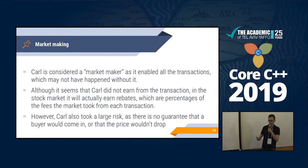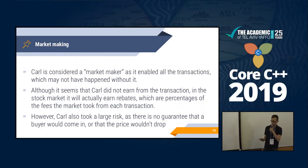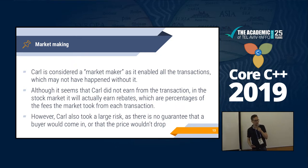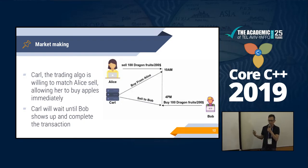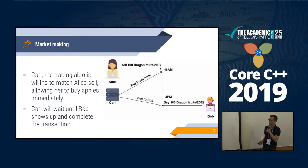It seems Carl didn't make any money — he bought and sold for the same price. But actually, each transaction has a fee in the market. Since Carl is a market maker, the market can give him a rebate for the risk he took. Carl took a very big risk — he doesn't know what will come in, and the algorithm doesn't know if the price of dragon fruit will drop. You need to take very calculated risks, because you can lose everything with one bad trade. And assuming he does want to make those trades, he's likely to have a lot of competition, so he needs to beat all competition to the market.